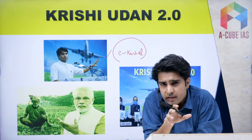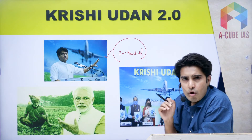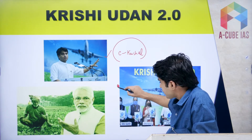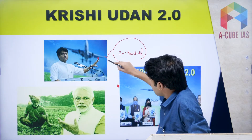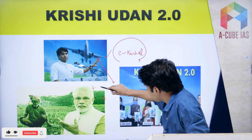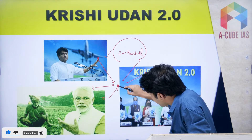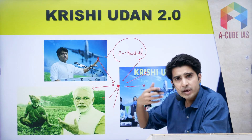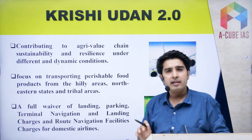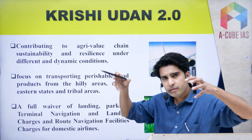Third, a freight grid will be established on the lines of the hub and spoke model. There will be a central location, and agri produce from different parts will be brought to this central location, making the transportation of agri produce easier.